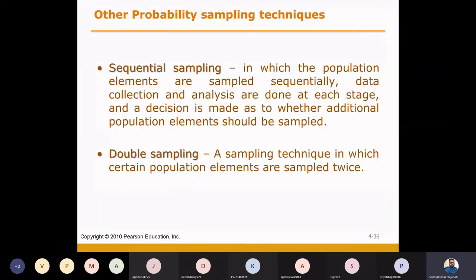What happens in double sampling? It's a sampling technique in which certain population elements are sampled twice. In this particular sampling method, in the first phase, you select the sample and collect the information.